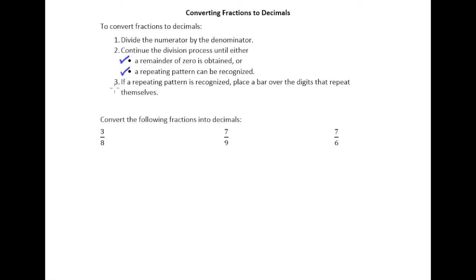We're going to see both scenarios in the examples below. Let's start with three eighths. Step one tells us to take the numerator divided by the denominator. So that's going to be a three here, and then an eight on the outside. Eight does not go into three, but we know that there's a decimal hiding out right here, and so three is the same as 3.0.